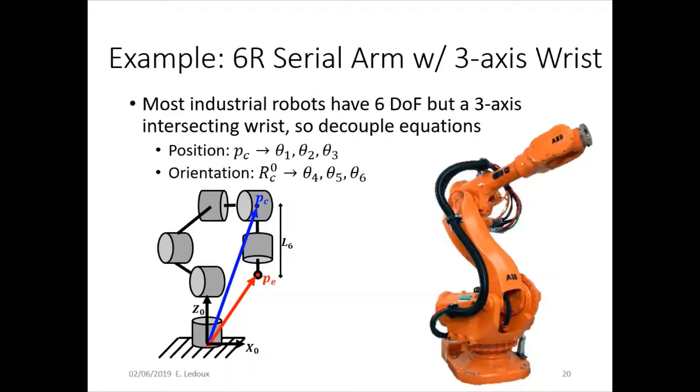We'll do an example of the 6R serial arm with a 3-axis wrist. Most industrial robots have 6-degree freedom, but many of them have a 3-axis intersecting wrist. So we can decouple the equations into position and orientation.